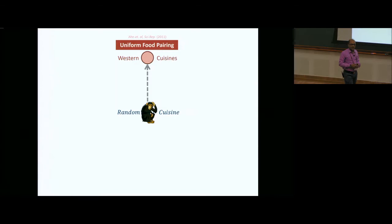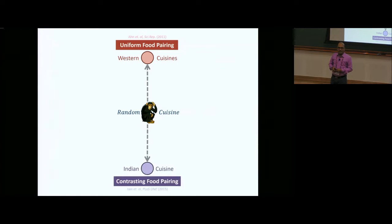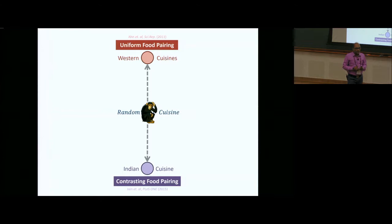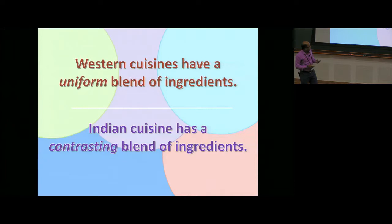What we had seen earlier was that many Western cuisines—Latin American, Northern American, Eastern and Southern European—tend to have a higher amount of flavor sharing among their ingredients, suggesting a uniform blend. Interestingly, what we found with Indian recipes compiled from Tarla Dalal was a contrasting blend of ingredients. A typical Indian recipe tends to have fewer shared molecules—a potpourri of flavors—as opposed to a typical Western recipe. It is a statistical observation nonetheless; exceptions exist.